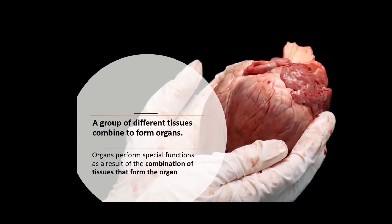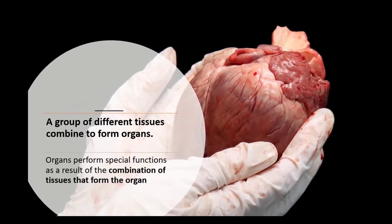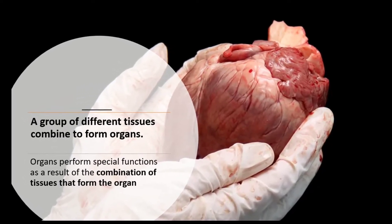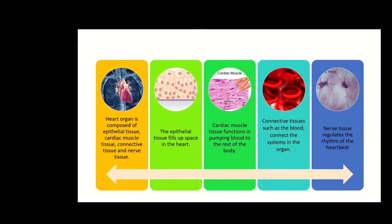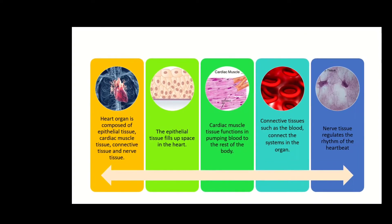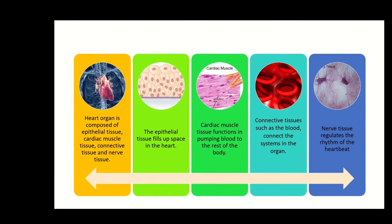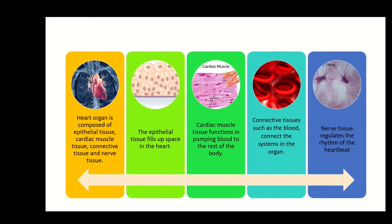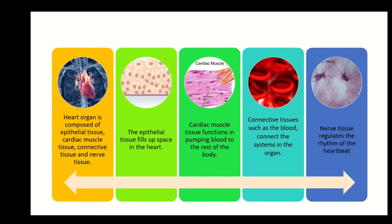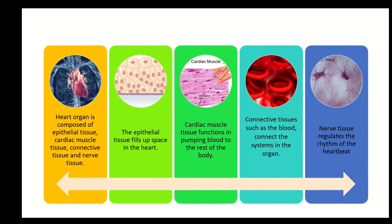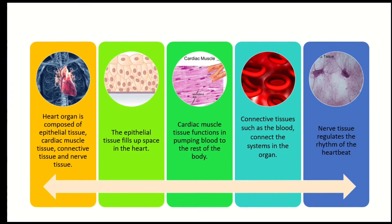An organ performs a special function as a result of the combinations of tissues. For example, the heart organ consists of epithelial tissue, cardiac muscle tissue, connective tissue, and nerve tissue. The epithelial tissue fills up the spaces in the heart, the cardiac muscle tissue functions to pump blood to the rest of the body, the connective tissue such as blood connects the system in the organ, and the nerve tissue regulates the rhythm of the heartbeat.